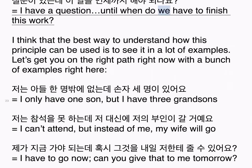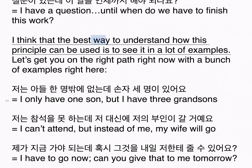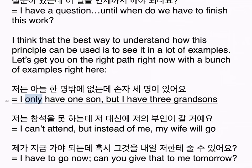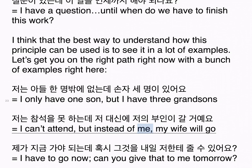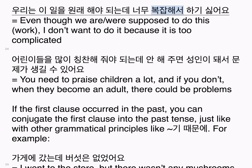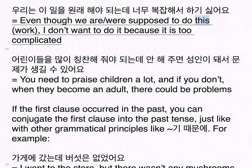I think the best way to understand how this principle can be used is to see it in a lot of examples. 저는 아들 한 명밖에 없는데 손자 세 명이 있어요 — I only have one son, but I have three grandsons. 저는 참석을 못 하는데 저 대신에 저의 부인이 갈 거예요 — I can't attend, but instead of me, my wife will go. 제가 지금 가야 되는데 혹시 그것을 내일 저한테 줄 수 있어요? — I have to go now. Can you give that to me tomorrow? 우리는 이 일을 원래 해야 되는데 너무 복잡해서 하기 싫어요 — Even though we're supposed to do this work, I don't want to do it because it is too complicated.